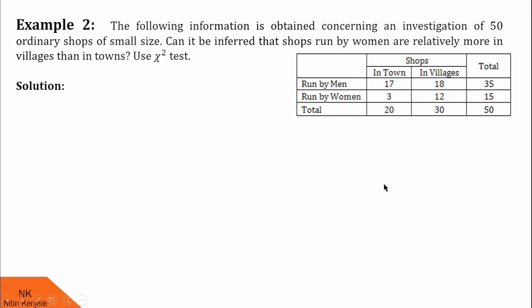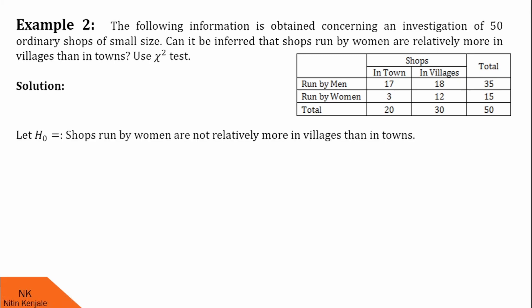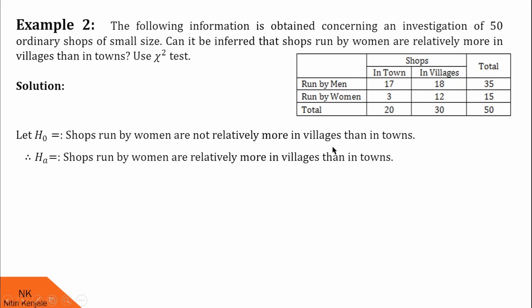Now, let us proceed for the solution. First, we define null hypothesis and alternative hypothesis. Null hypothesis should be: shops run by women are not relatively more in villages than in town. Whereas alternative hypothesis will be opposite of this: shops run by women are relatively more in villages than in town.